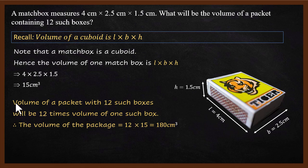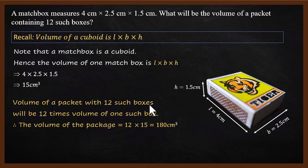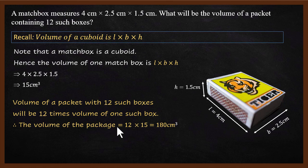The volume of a packet with 12 such boxes will be 12 times the volume of one such box. This is the important statement. Therefore, the volume of the package is 12 multiplied by 15, which gives 180 centimeter cube.